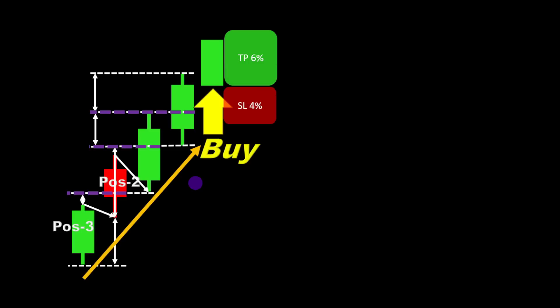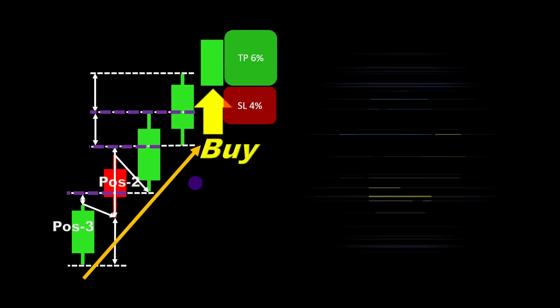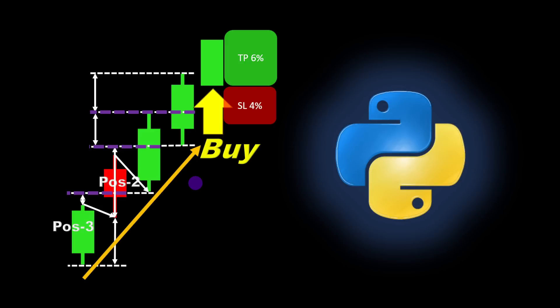When all conditions are met, we enter at the open of the next candle and set the stop loss and take profit levels within a certain percentage of the entry price. The code is available for download from the link in the description, so you can run it on any asset and apply your own modifications.